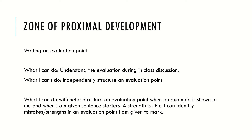An example for psychology: writing an evaluation point. What students can usually do is understand an evaluation point during class discussion — listening and possibly contributing. You may have had the experience of thinking 'yes, I've got this,' then trying to write it up independently and thinking 'not a clue.' That's the struggle zone. What they can't do at all, at the start of the year, is independently structure an evaluation point. But with help — for example, with an example shown alongside — they can have a go at structuring a different evaluation point using it as a model.